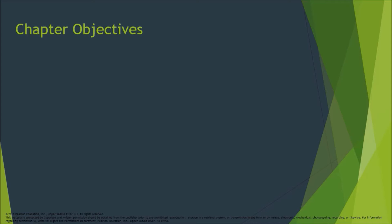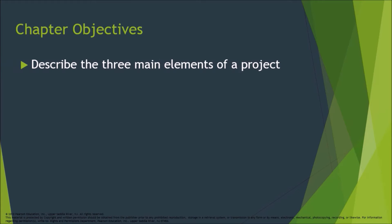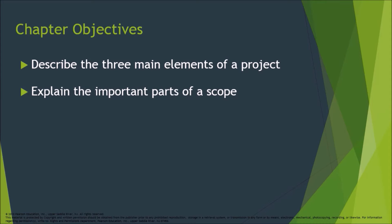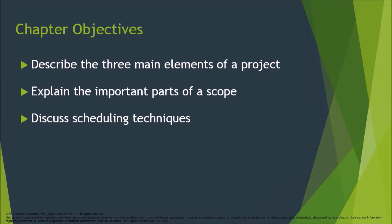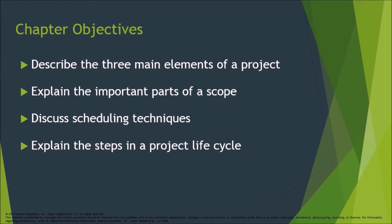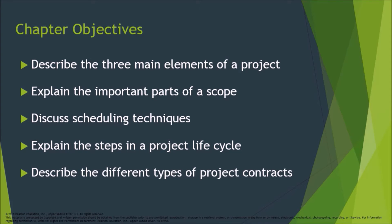Chapter Objectives: Describe the three main elements of a project. Explain the important parts of a scope. Discuss scheduling techniques. Explain the steps in a project life cycle. Describe the different types of project contracts.